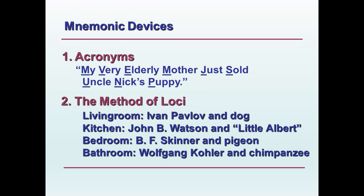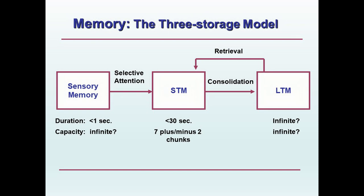My hope is that you engage in elaborative rehearsal from now on if you're not doing so already — it will certainly help you do better in this course. Here's the three storage model of memory again. If you can draw this diagram, label its parts and processes, and identify the duration and capacity of each type of memory, that's a good framework for remembering the information you need for this quiz. If something goes wrong in any part of the model — decay of sensory memory, disruption of selective attention, decay of short-term memory, interrupted consolidation, decay of long-term memory, or disruption of retrieval — then forgetting will occur. However, mnemonic devices help you remember information more easily.